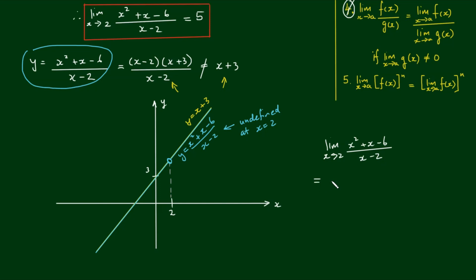So if this function is undefined at x equals 2, why can we say that the limit as x approaches 2 of x squared plus x minus 6 on x minus 2, why can we say that this is equal to the limit as x approaches 2 of x plus 3? Well, because when we're evaluating limits, we can make x go as close as we like to the number 2, but it is never equal to, x is never equal to the value of 2.